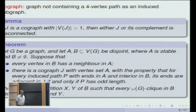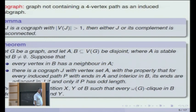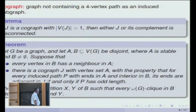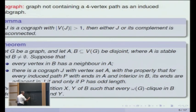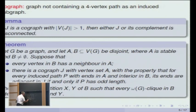The conclusion is you can partition B into two sets so that every maximum clique in G meets both halves. The proof is easy — you do induction on the co-graph. It's either disconnected or its complement is disconnected.